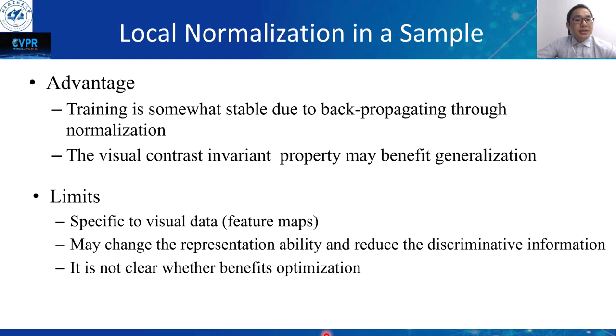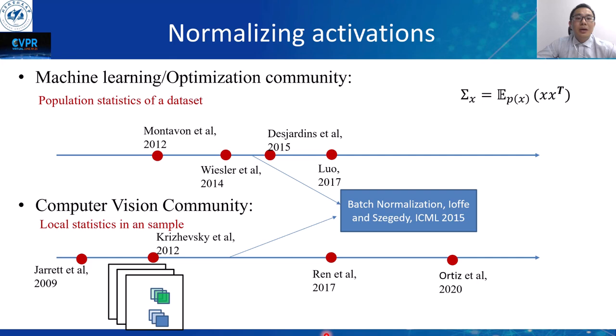However, these methods have some limits. The motivation of the methods is specific to visual data or feature maps. These methods may change the representation ability and reduce discriminative information. It is also not clear whether they benefit optimization. Based on the lens of normalization in the machine learning community and local normalization in the computer vision community, it is time to introduce batch normalization.